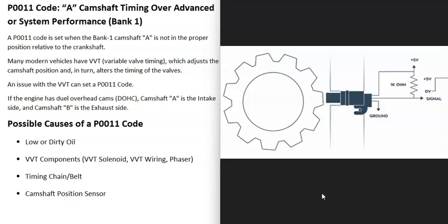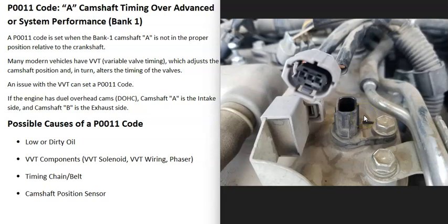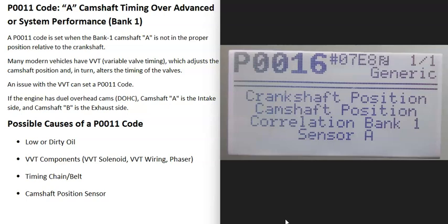The last possible cause is a bad camshaft position sensor. There might not be any real problem, but the computer thinks there is because the camshaft position sensor is sending bad data. This would be the camshaft position sensor on bank one camshaft A, since each camshaft has its own sensor. Usually when that sensor goes bad, you'll get another code — for example, a P0016 code: crankshaft position/camshaft position correlation, bank one sensor A. If you're getting other codes like this, it's a good idea to test that sensor and be sure it's working correctly.